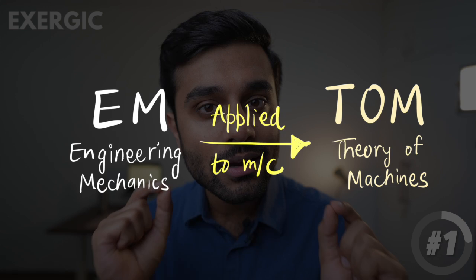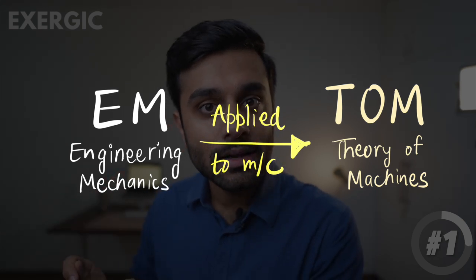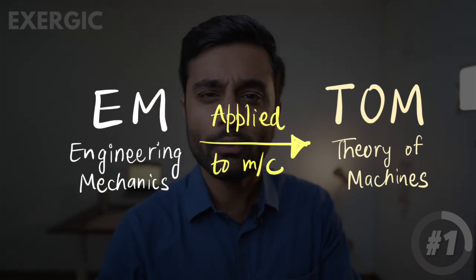There are many students who struggle in solving questions of Theory of Machines even after covering everything, and they don't understand why. Let me explain by revealing the number 1 most important subject of GATE Mechanical Engineering. Theory of Machines is an application of Engineering Mechanics applied to machines and mechanisms. Whatever you covered in Engineering Mechanics related to velocity, acceleration, and motion — when you apply that to different mechanisms and machines, you get Theory of Machines.